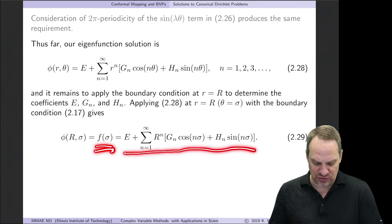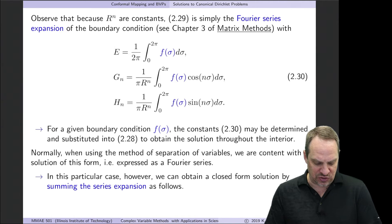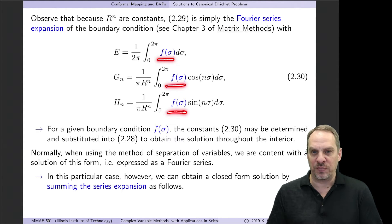Then we have this expression 229, and then you get the coefficients E, G_n, and H_n that are in the eigenfunction expansion using Fourier series expansions. So again, the f of sigma shows up in these integrals. You perform the integrals, you get the values of the Fourier series expansion coefficients.